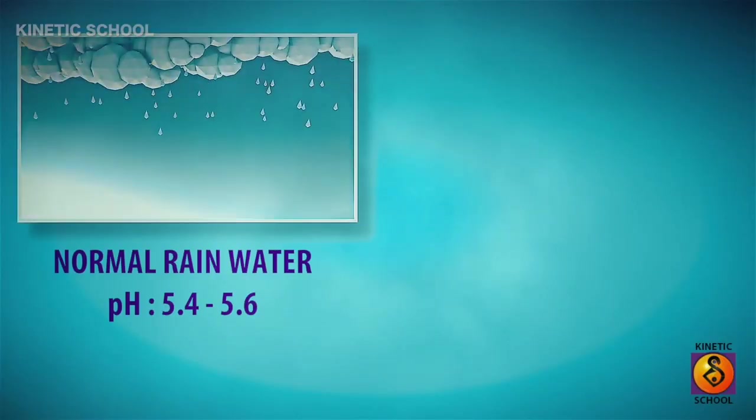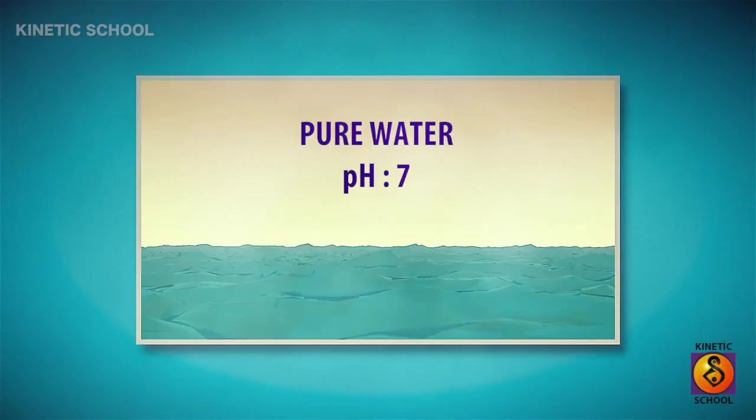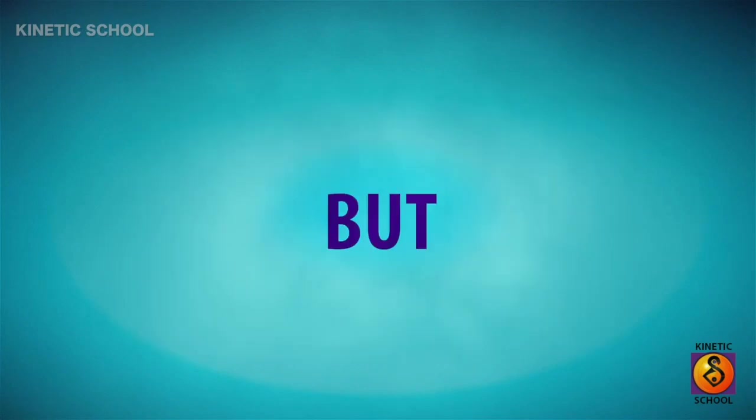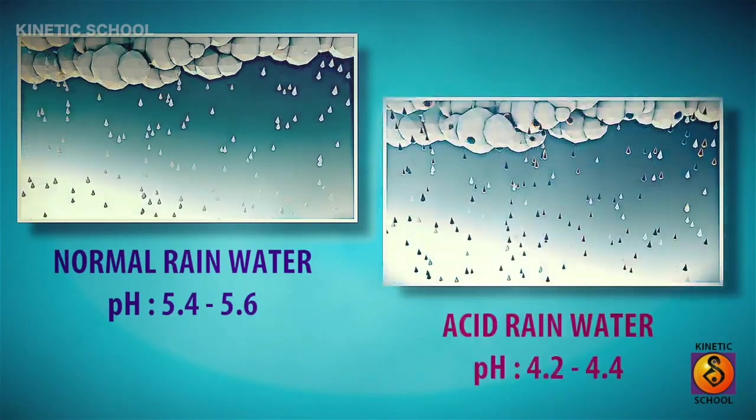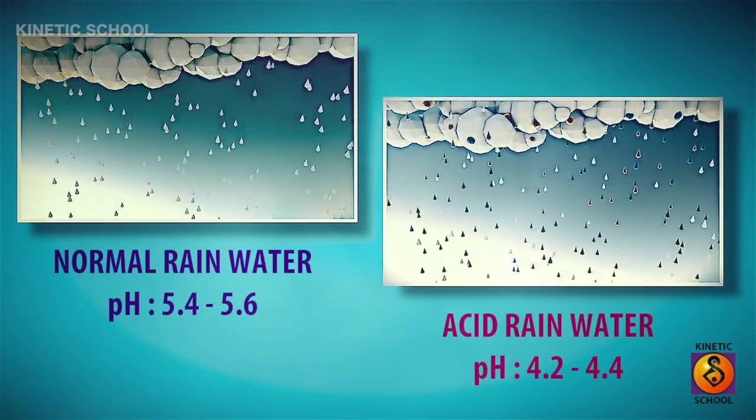Normal rain is slightly acidic with a pH of 5.6, where pure water has pH of 7, while acid rain generally has pH between 4.2 and 4.4.